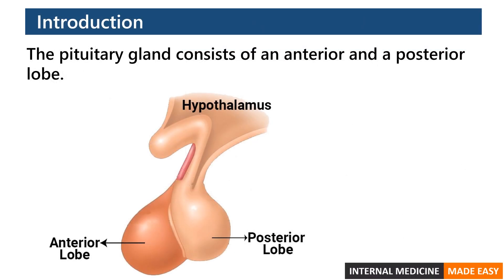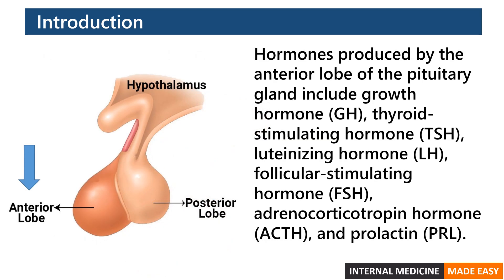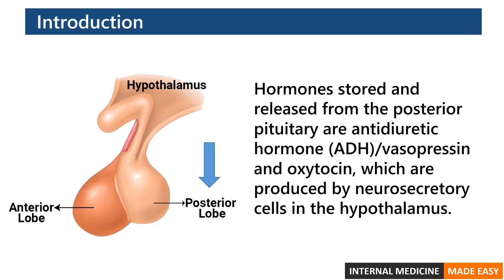The pituitary gland consists of an anterior and a posterior lobe. Hormones produced by the anterior lobe include growth hormone, thyroid stimulating hormone, luteinizing hormone, follicular stimulating hormone, adrenocorticotropin hormone, and prolactin. Hormones stored and released from the posterior pituitary are antidiuretic hormone or vasopressin and oxytocin, which are produced by neurosecretory cells in the hypothalamus.